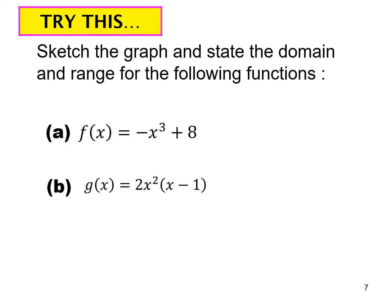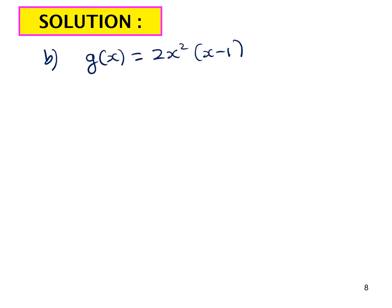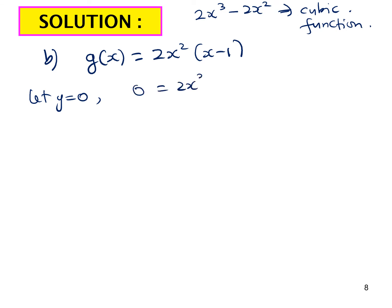For this exercise, please attempt parts a and b. For part b, this is a cubic function because when you expand it you get 2x³ - 2x², which is a cubic function. To sketch g(x), find the x-intercepts by setting y = 0: you get 2x²(x - 1) = 0, giving x = 0 and x = 1.